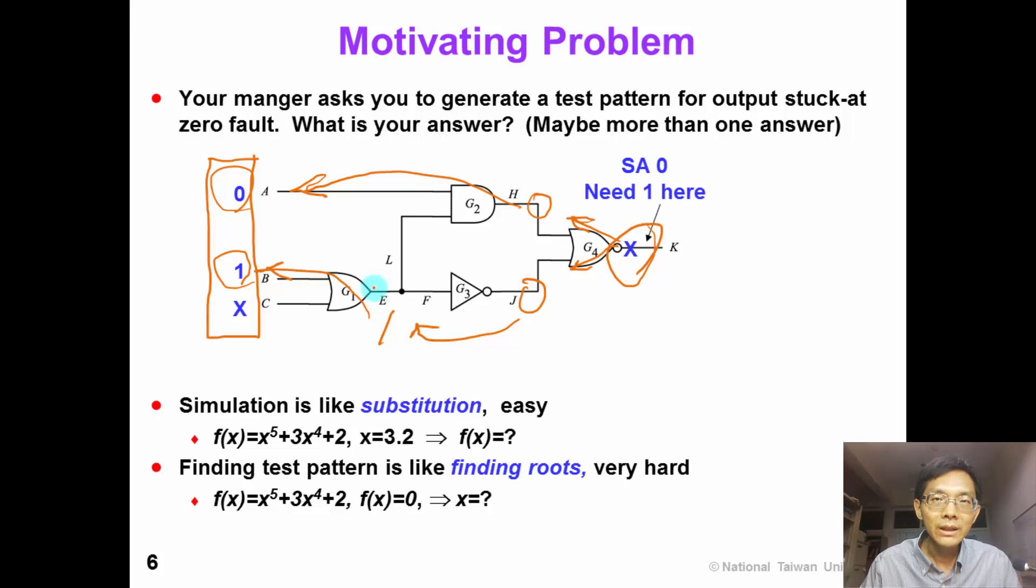From this motivating problem, we can know that test generation is not as simple as simulation. Here is an analogy. In traditional algebra, given a function f(x) and given the value of x, we can easily find out the value of f(x) by substitution. So simulation is something like substitution. It's a relatively easy task.